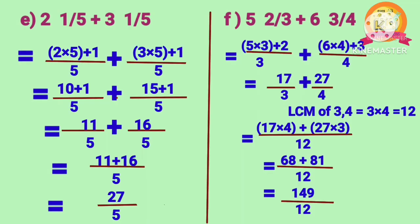Problem E: 2 1 by 5 plus 3 1 by 5. Here 2 1 by 5 and 3 1 by 5 are mixed fractions. Converting 2 1 by 5 into an improper fraction gives 11 by 5. Converting 3 1 by 5 gives 16 by 5. After adding both fractions, we get 27 by 5.